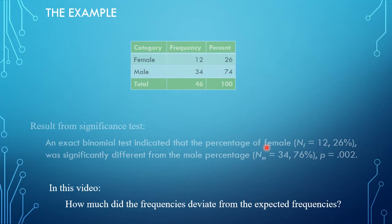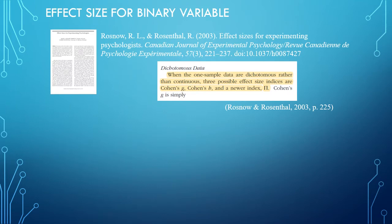One of those measures that can do that is Cohen's H. There are a few different effect sizes that can actually be used. Rosnow and Rosenthal report that you can use Cohen's G, Cohen's H, and a newer index capital PI.